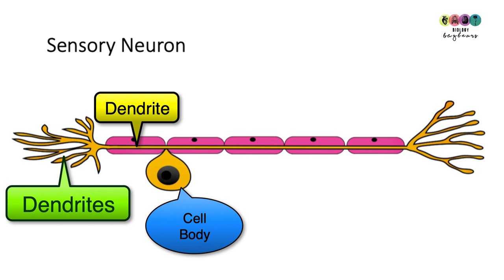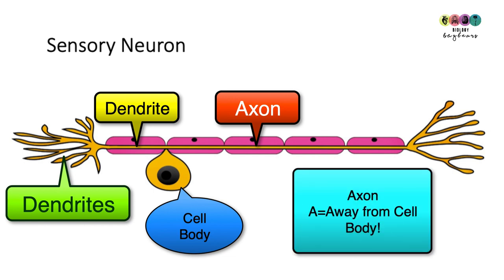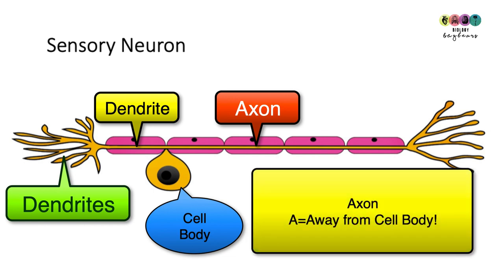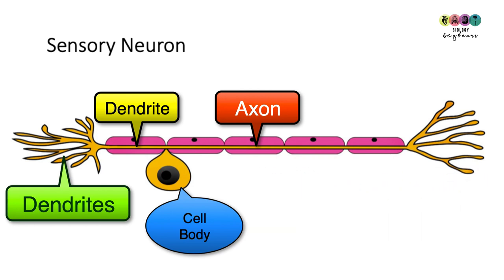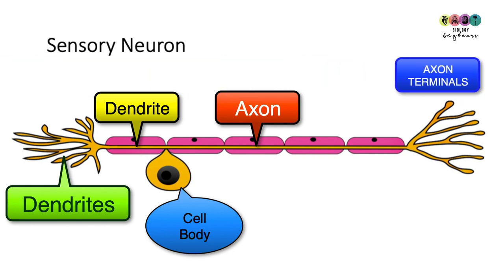From the cell body, the electrical impulse passes along another fibre known as the axon. Axon — A for away. It's really important that you associate dendrites as going towards the cell body and axons as going away from the cell body.